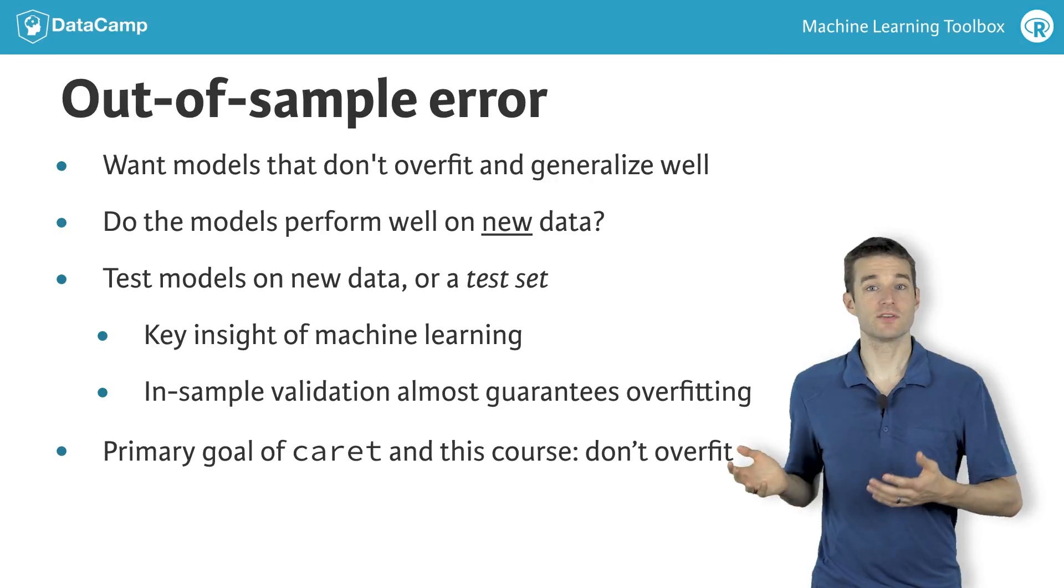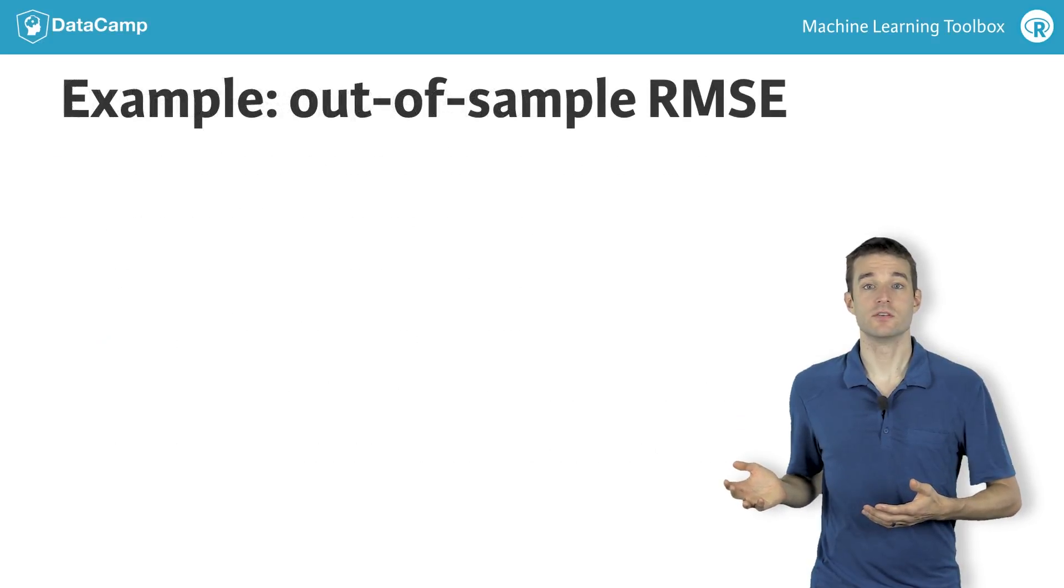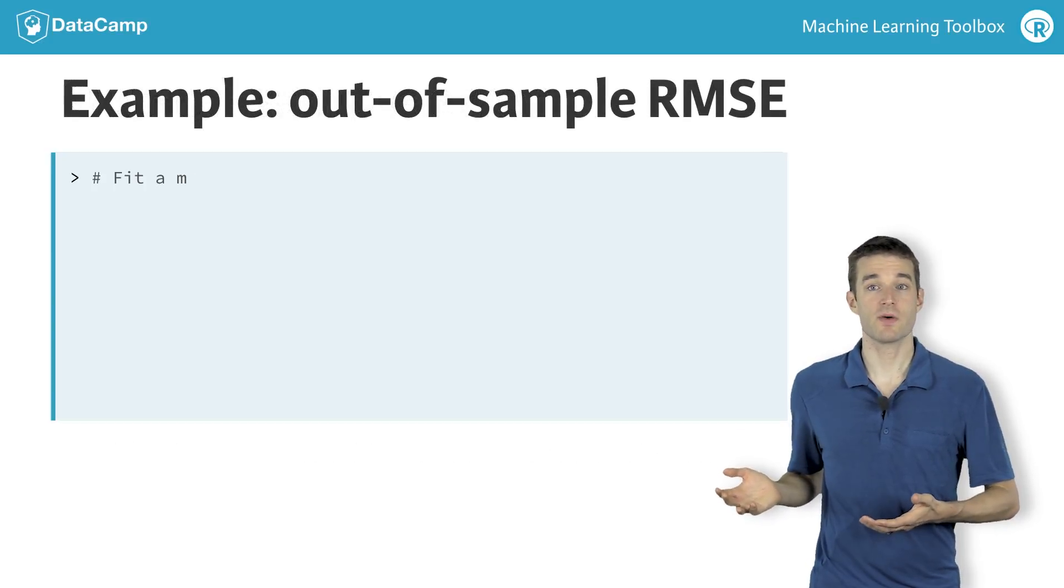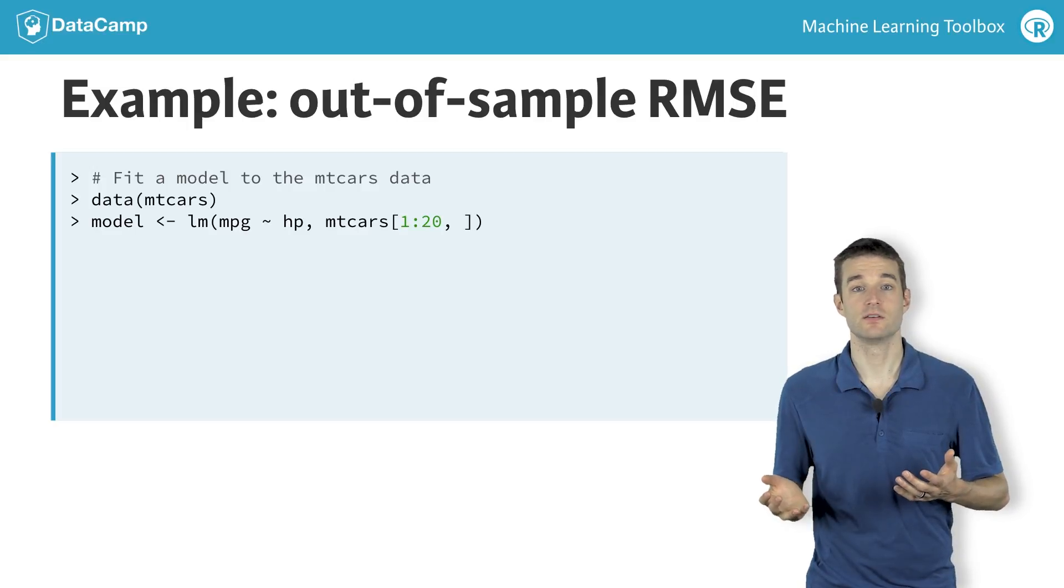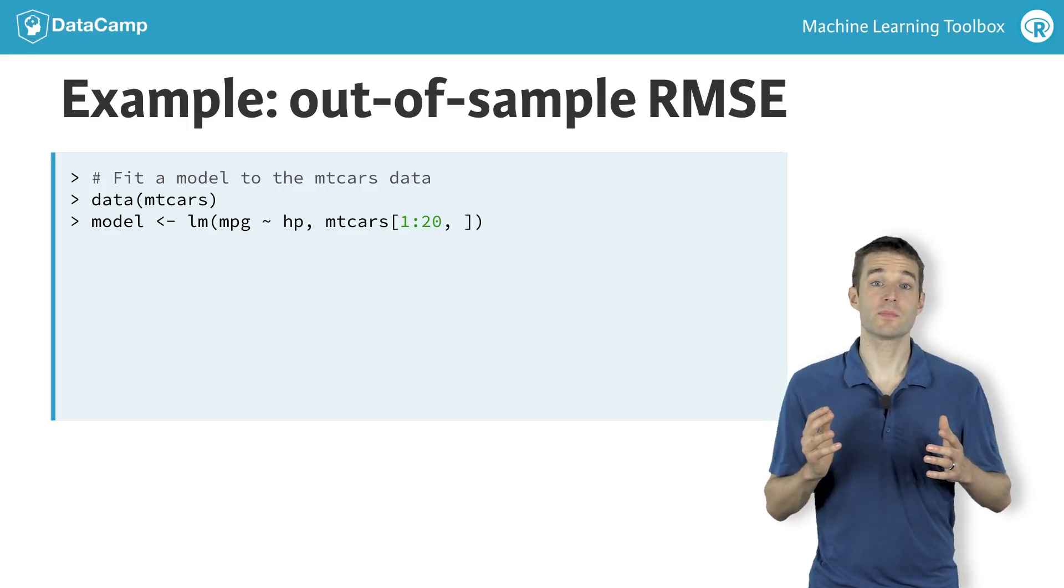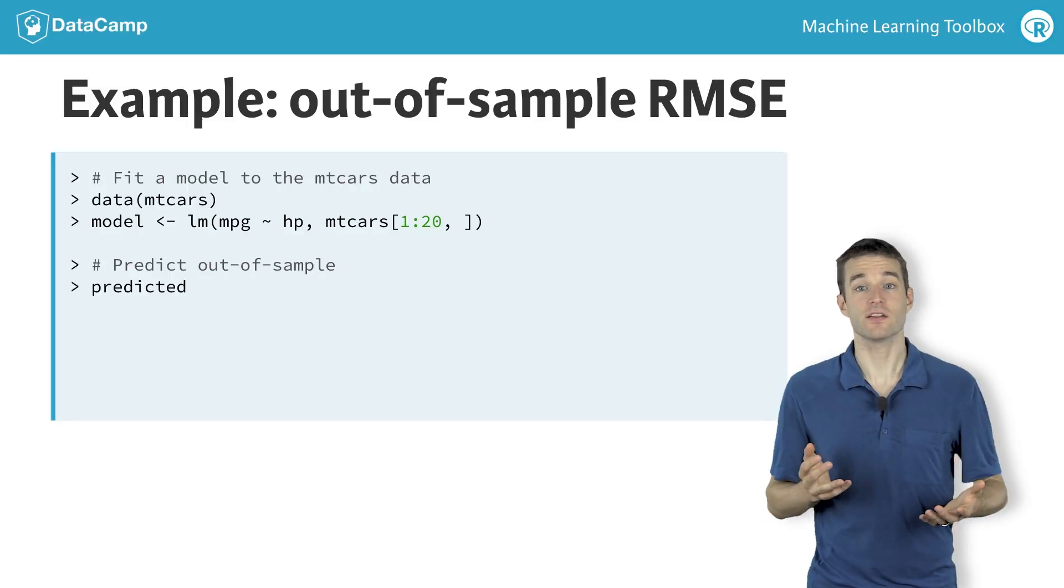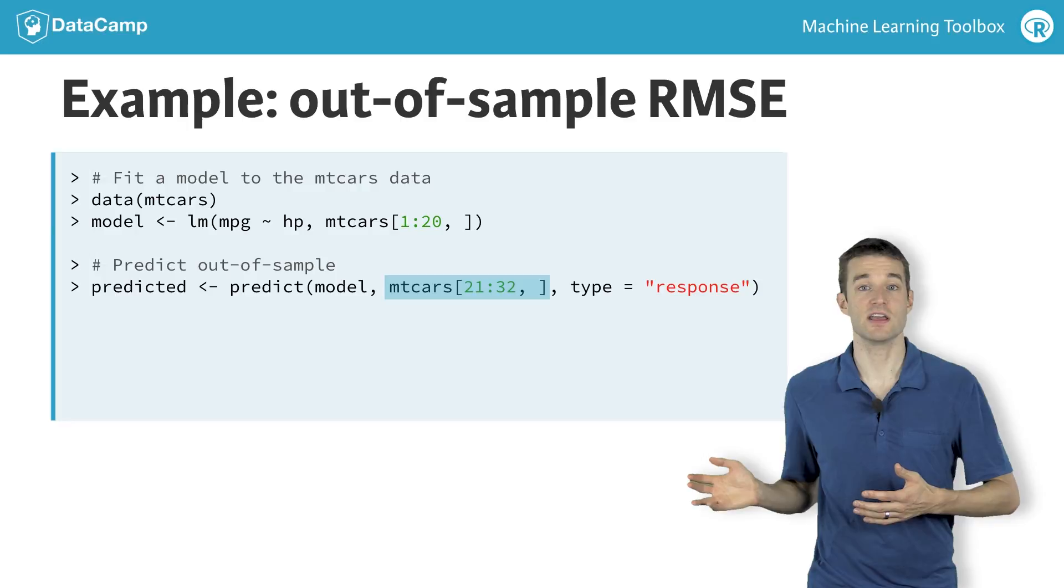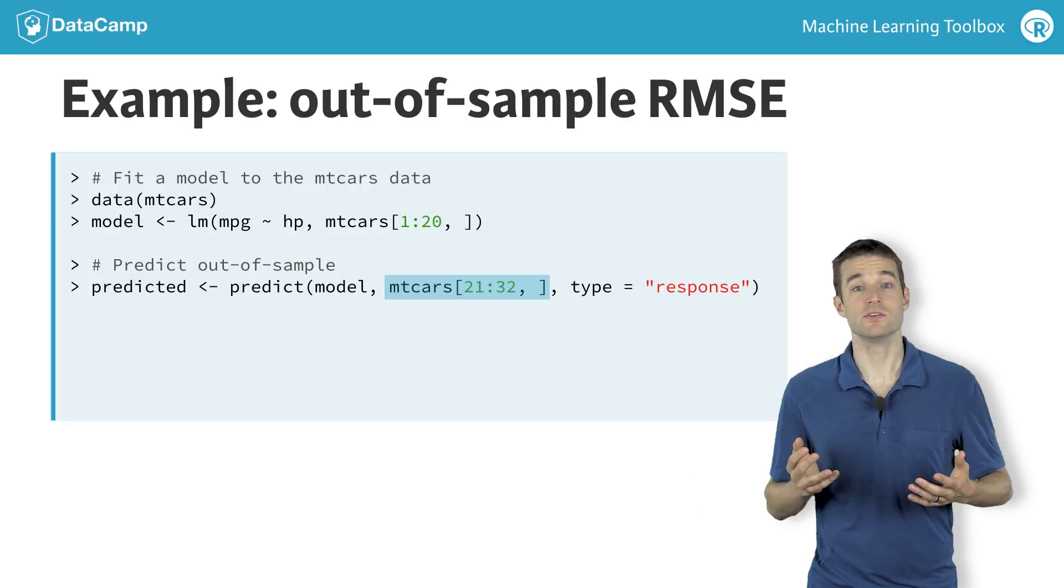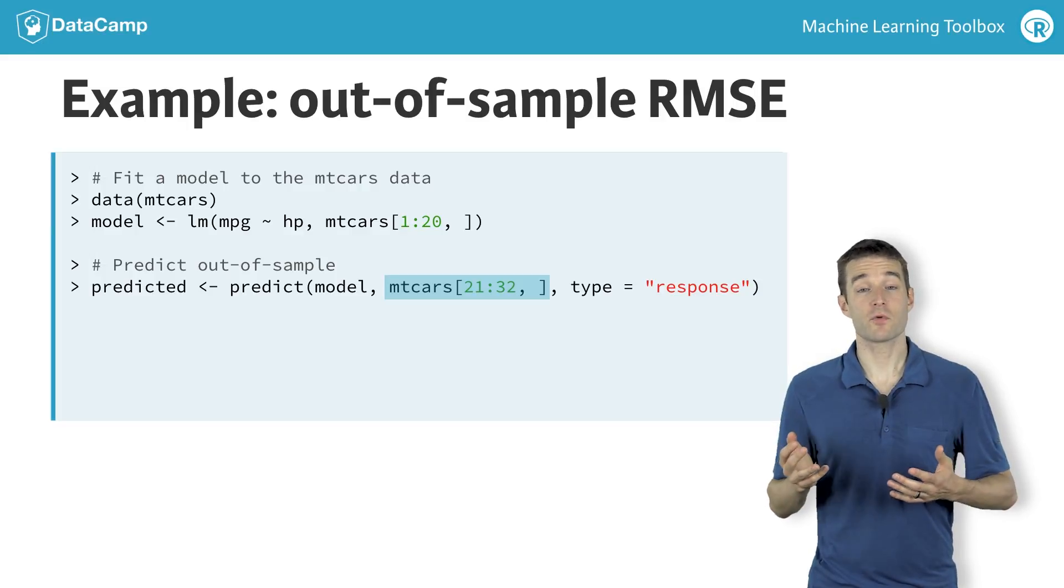Let's walk through a simple example of out-of-sample validation. We start with a linear regression model fit on the first 20 rows of the MT-CARS dataset. Next, we make predictions with this model on a new dataset, the last 12 observations of the MT-CARS dataset. The 12 cars in this test set will not be used to determine the coefficients of the linear regression model and are therefore a good test of how well we can predict on new data.